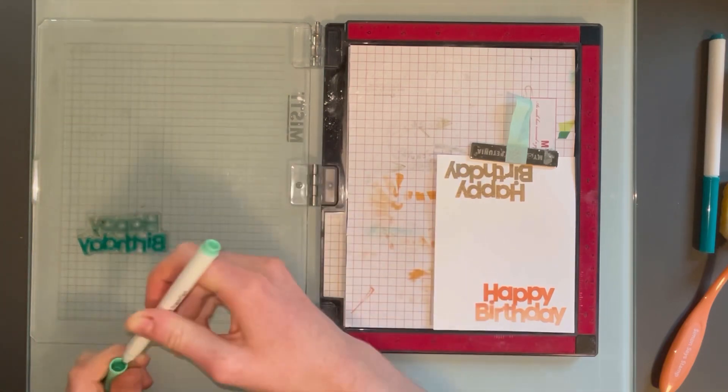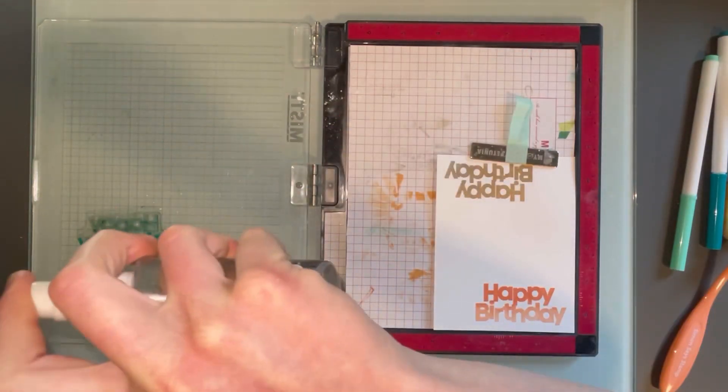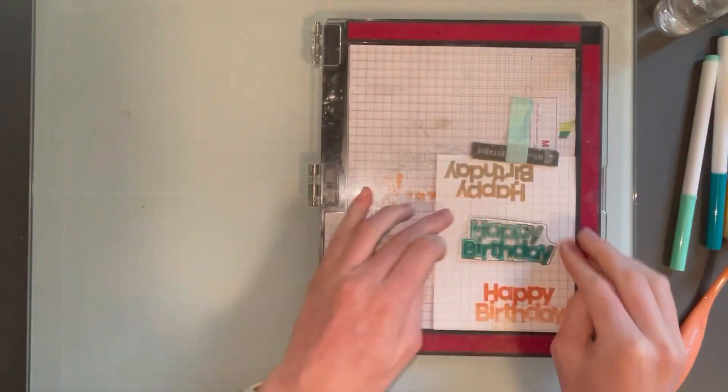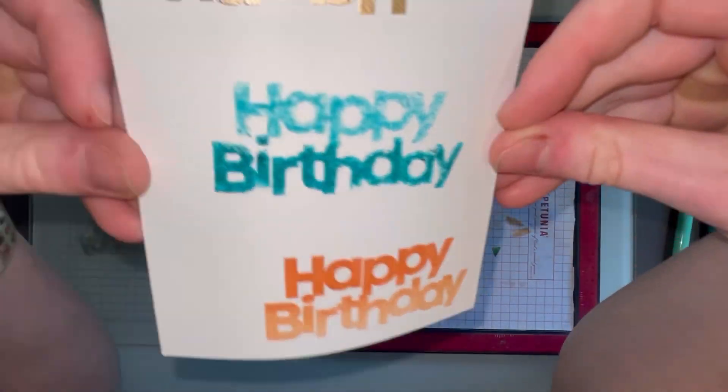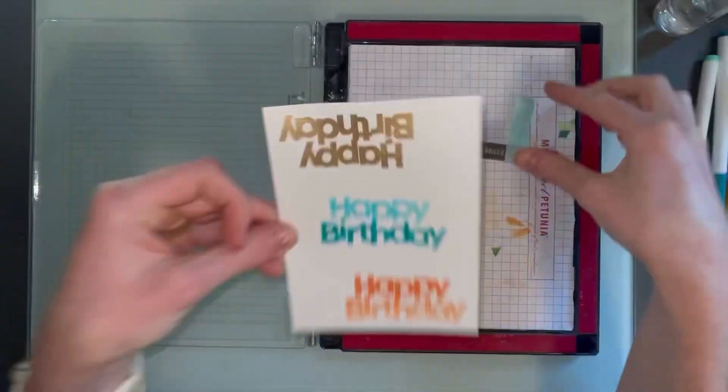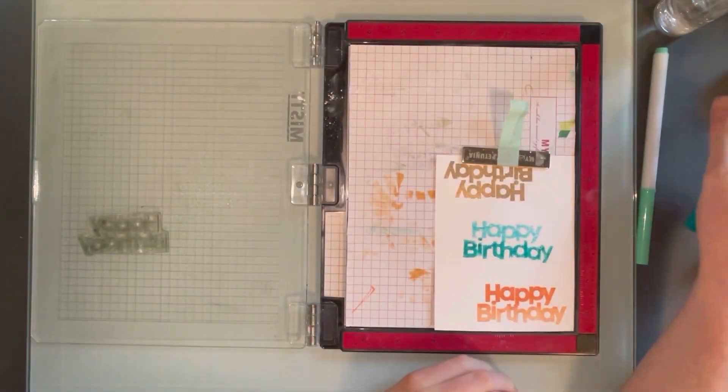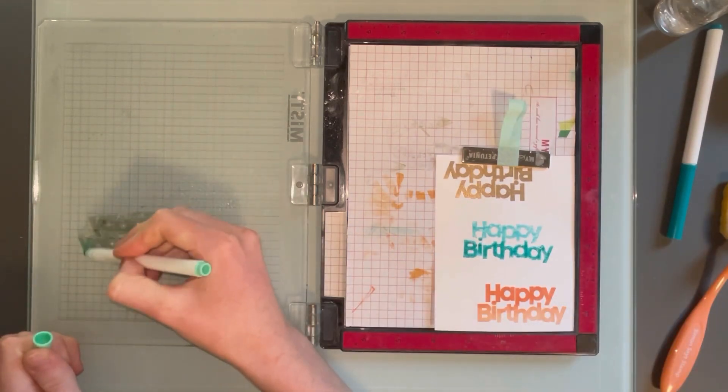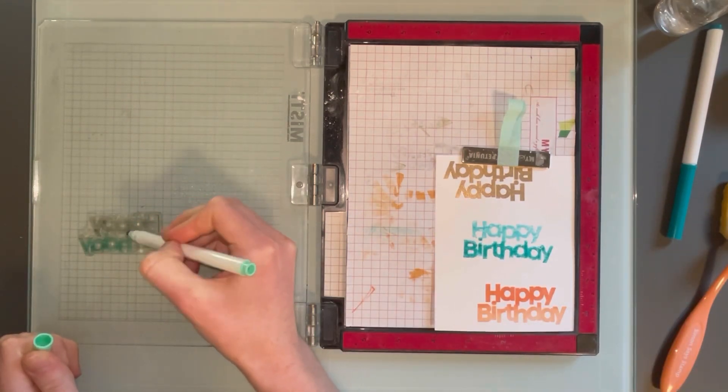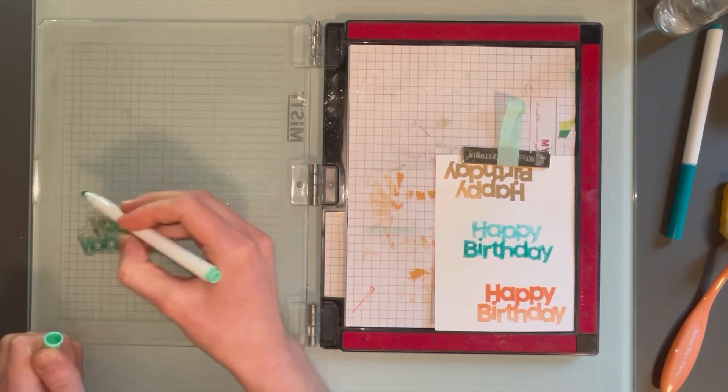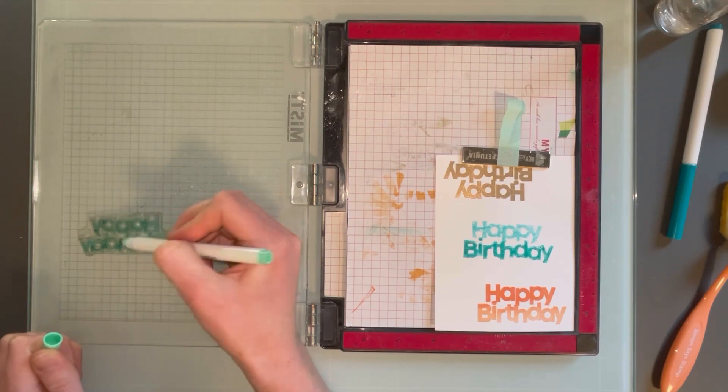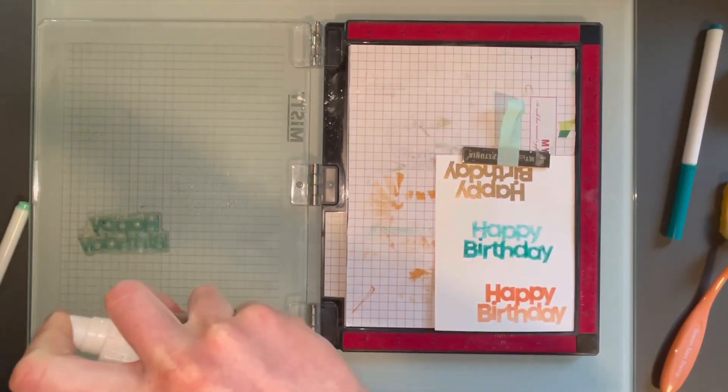There are many options. You can use Tombows. You can use Karen markers. There are a lot of options out there for watercolor markers. Just something that reacts with water is really great. I have this little spray bottle with some water in it and I am just going to spritz it over the stamp. Then when I stamp it, it will create this really cool watercolor look, which is a really fun way to get more from your stamps. I just wanted to share another one of my favorite techniques with you.